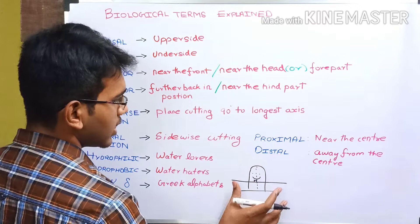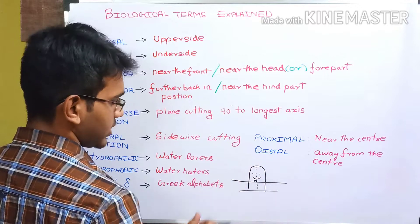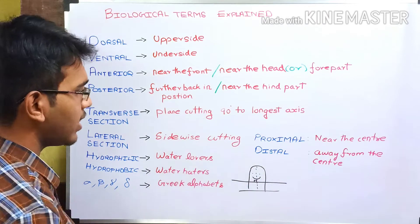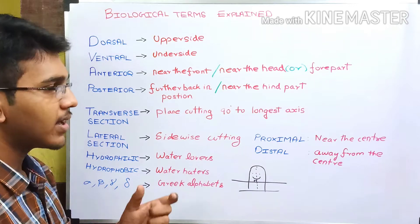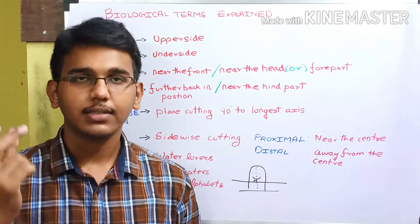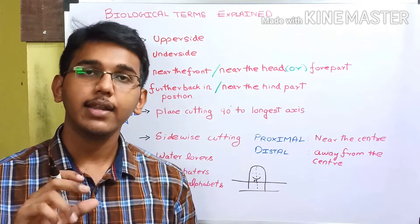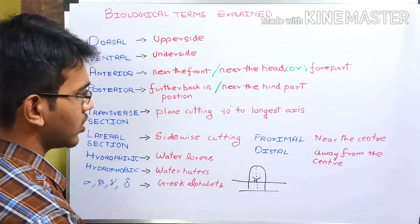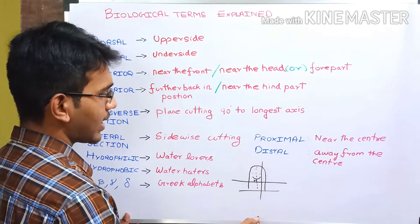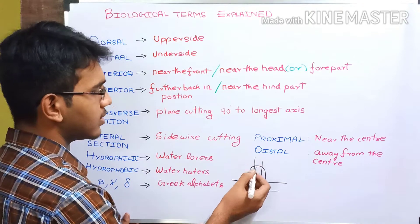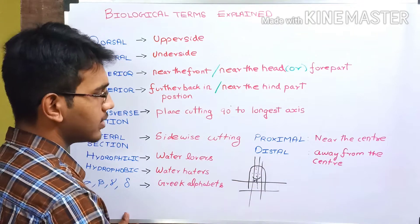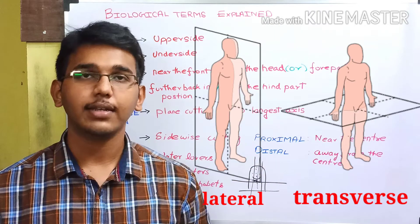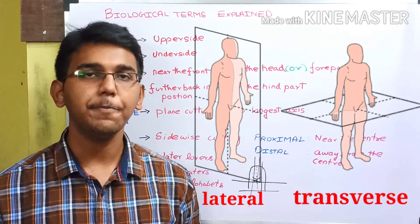A lateral section means cutting the organism sideways — the cutting plane is parallel to the longest axis of the organism. You can see the image of the transverse and lateral sections on the screen.